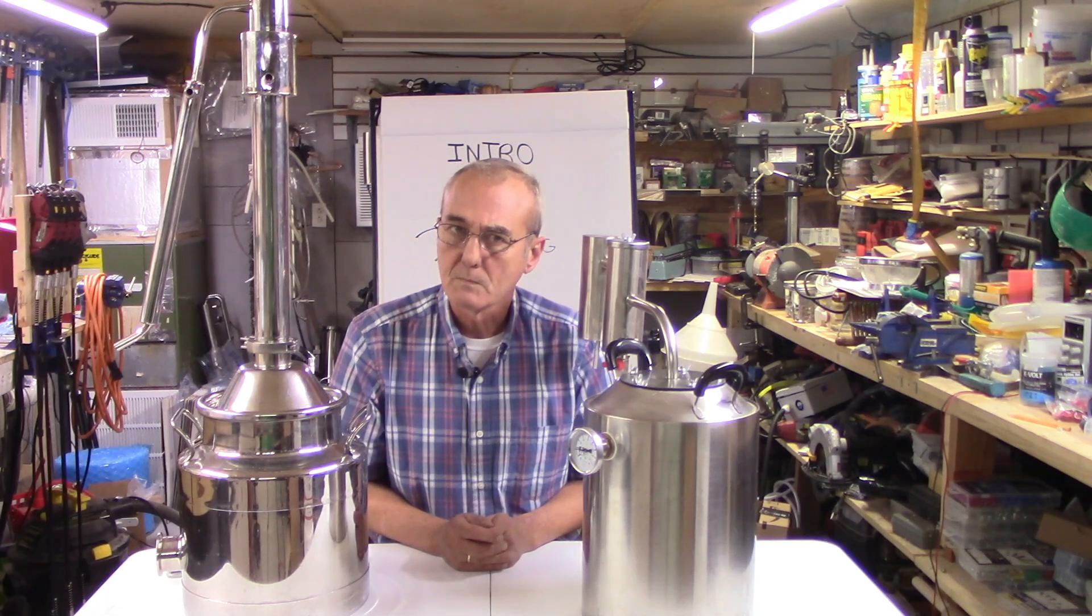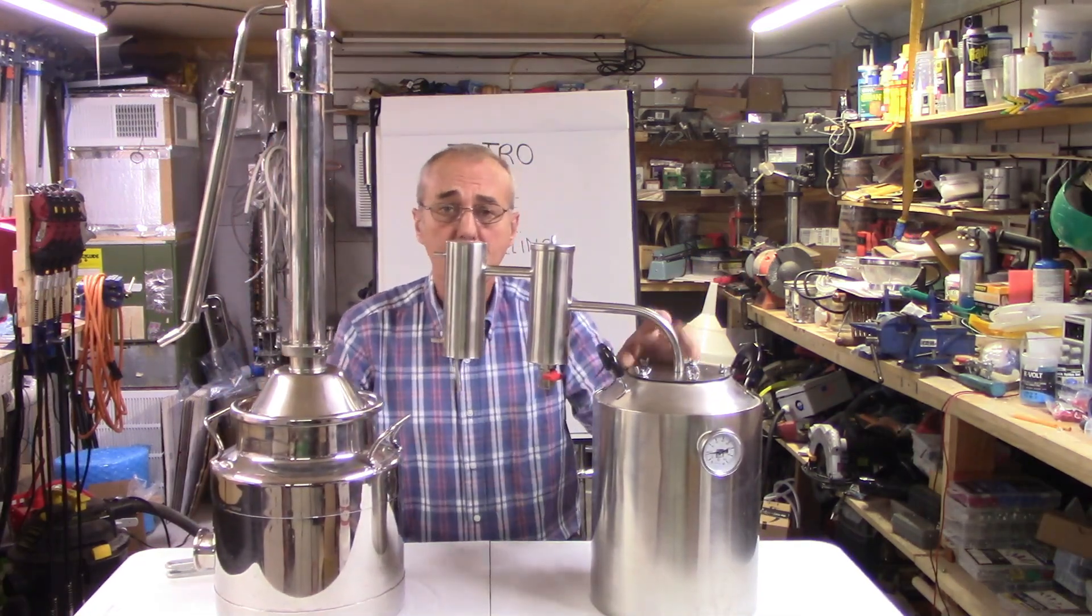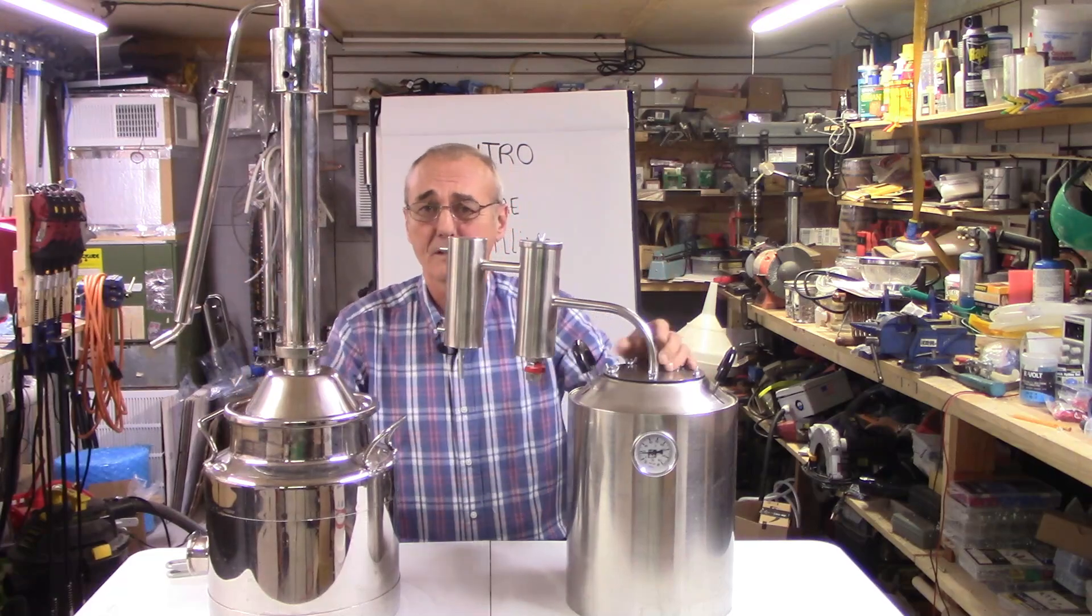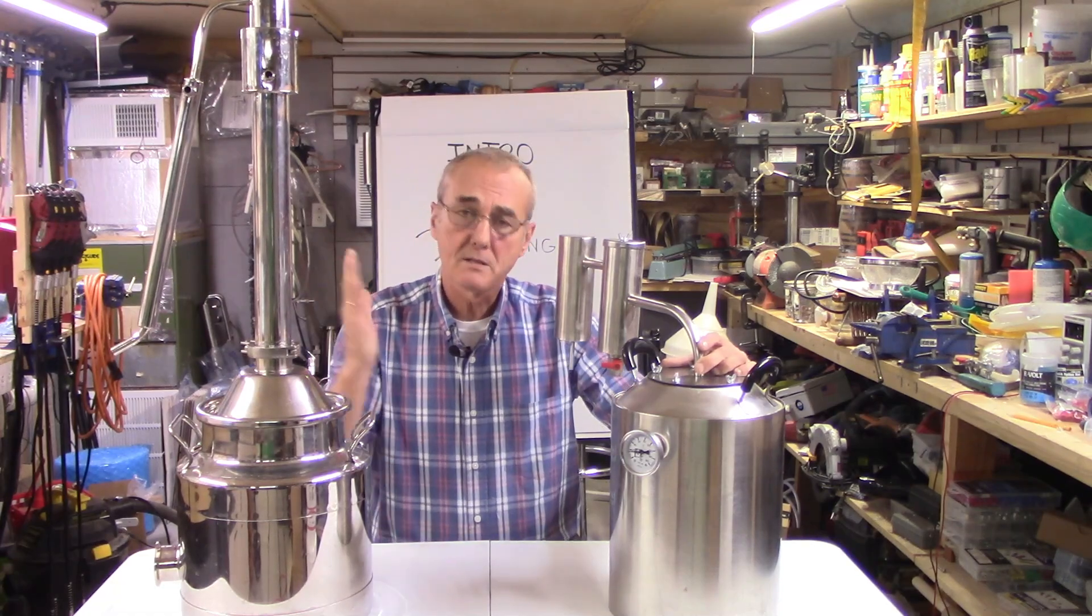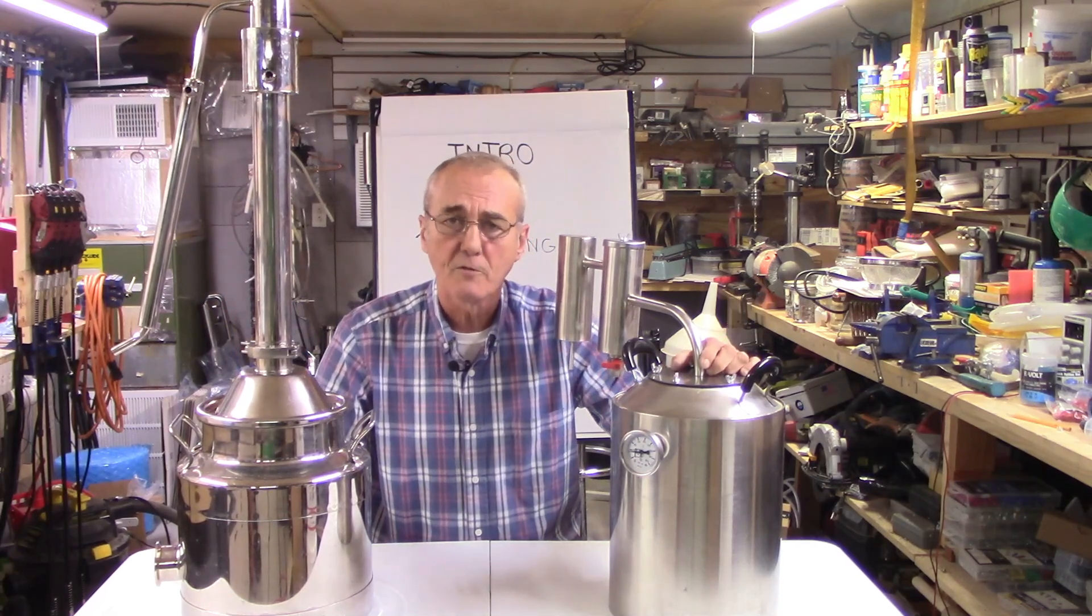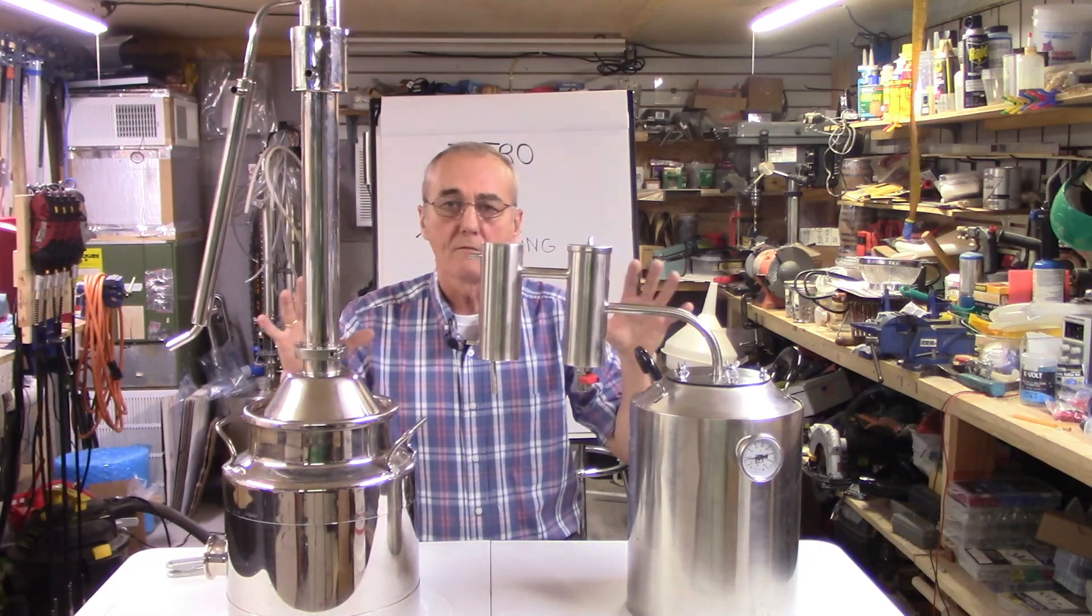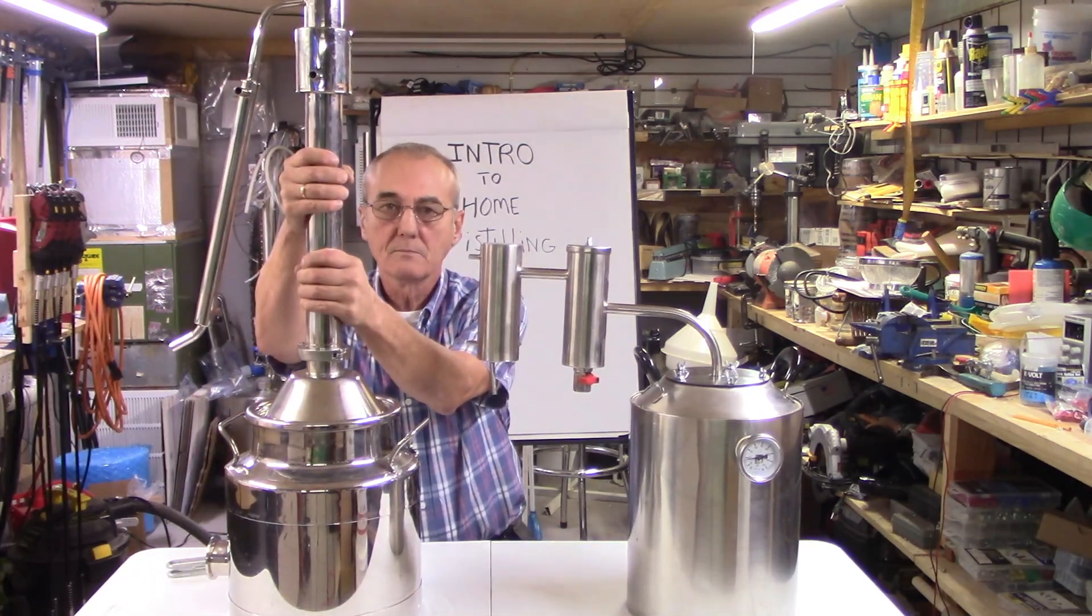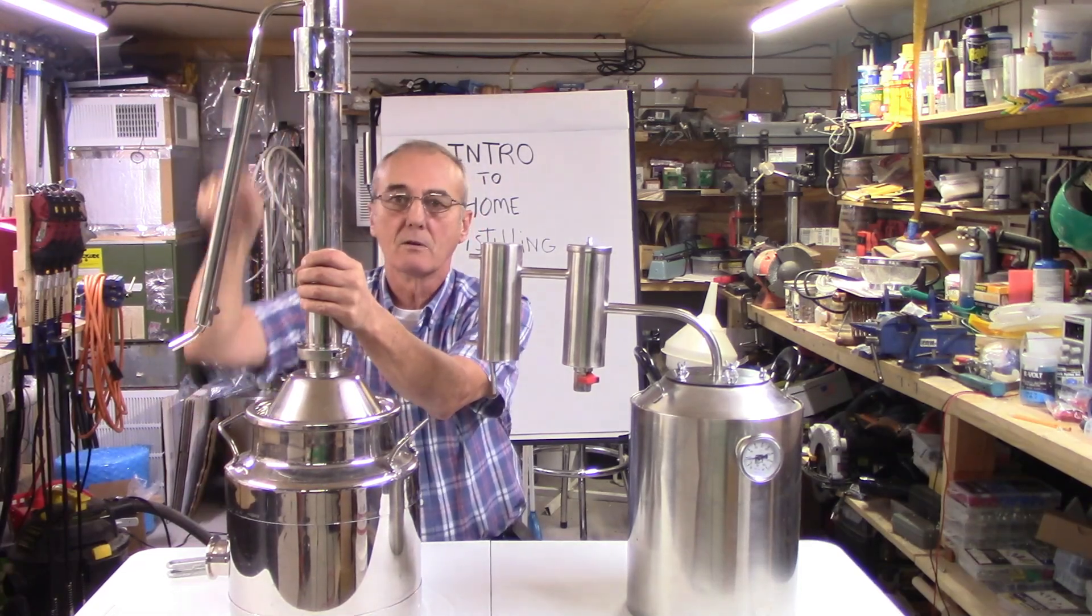I have two examples here of small stills and these are really good beginner or introductory stills. They run about the same price, somewhere around the $300-$350 range. Don't let that scare you off because there are a lot cheaper models out there. Just, it's buyer beware. You can get them for $130 on eBay or Amazon. They work exactly the same way, they're just designed a little bit differently.